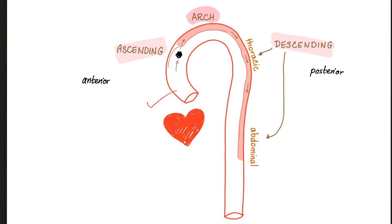One of the major complications is coronary artery problems. Why? Because the coronary arteries come from the ascending aorta. Imagine that this tear and this dissection and blood accumulation happened here — now you have blocked the coronary artery. And when you block the coronary artery, what's going to happen? Ischemia and infarction of the heart.